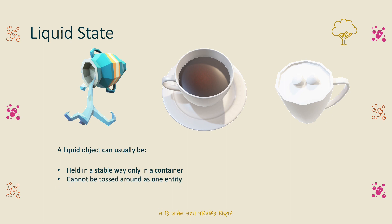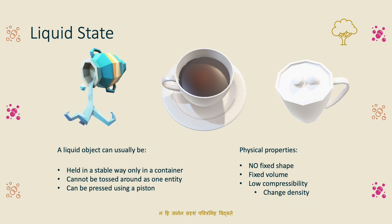When you press a piston with liquid inside, there is less compressibility. If you have a gas cylinder or a liquid piston under pressure, there is less compressibility. The liquid takes the shape of the container, but the total space it occupies is fixed.